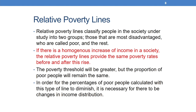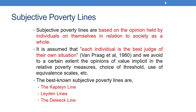Relative poverty lines classify people in the society into two groups: the most disadvantaged who are called poor, and the rest. If there is a homogeneous increase of income in a society, relative poverty lines provide the same poverty rates before and after this rise. The poverty threshold will be greater, but the proportion of poor people will remain the same. For percentages of poor people calculated with this type of line to diminish, there must be changes in income distribution.